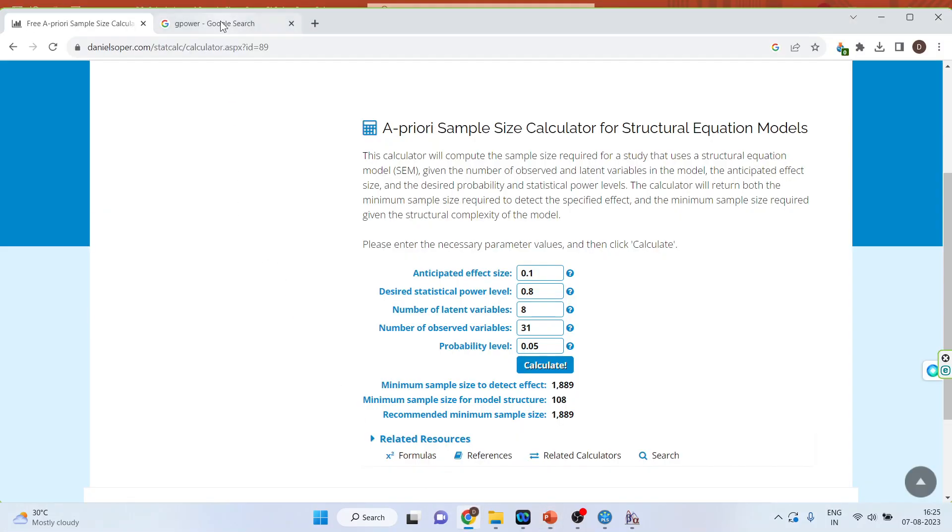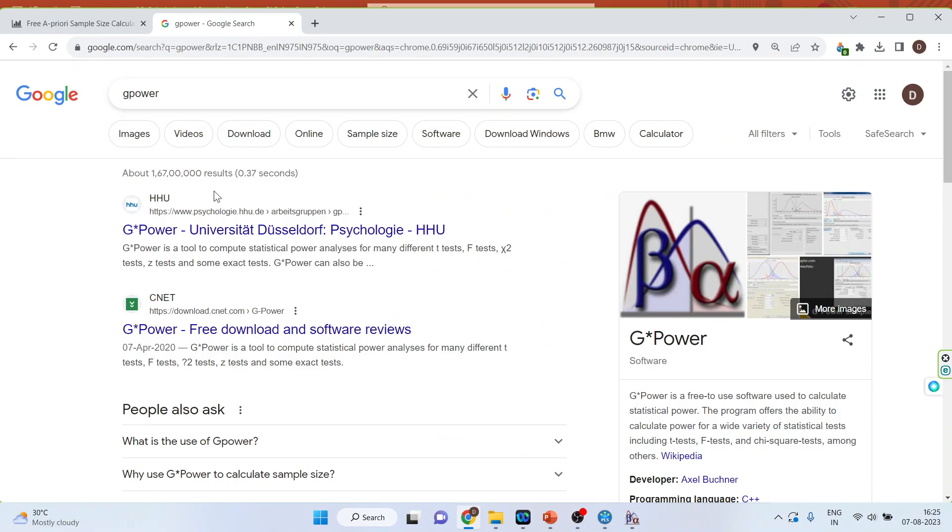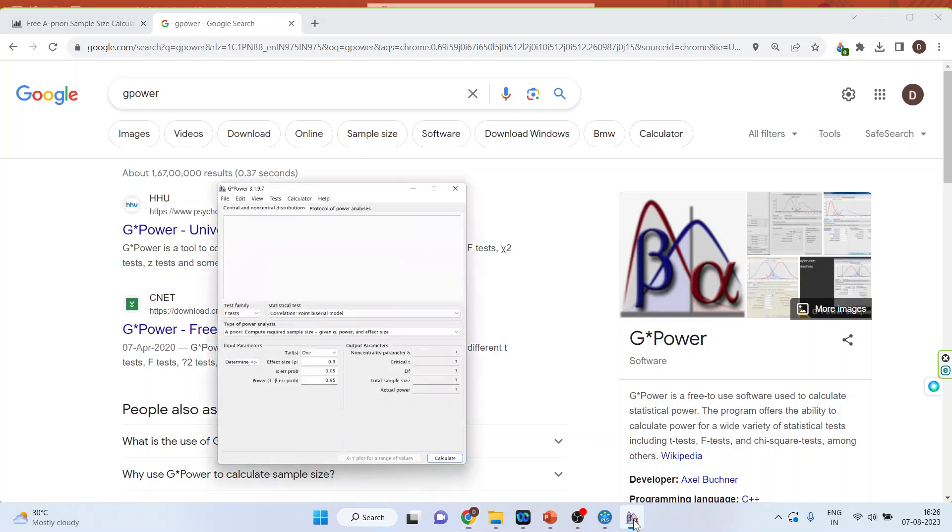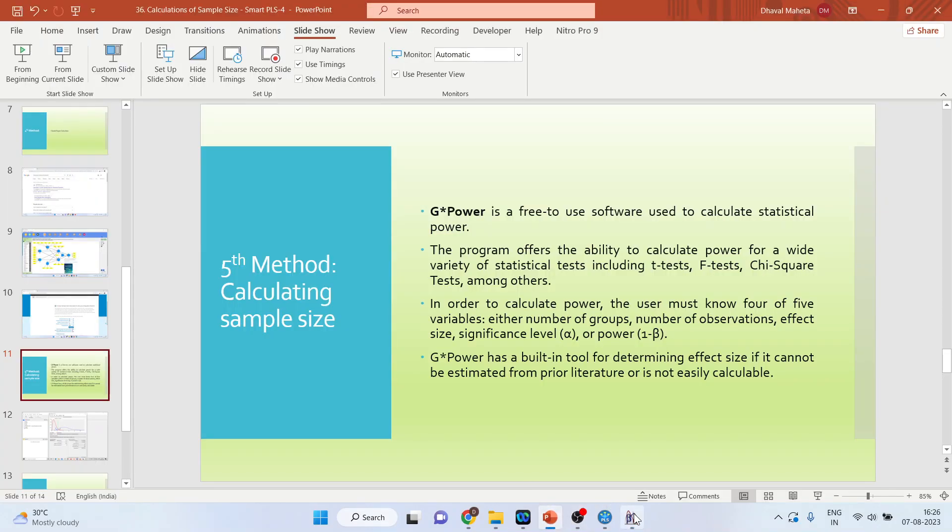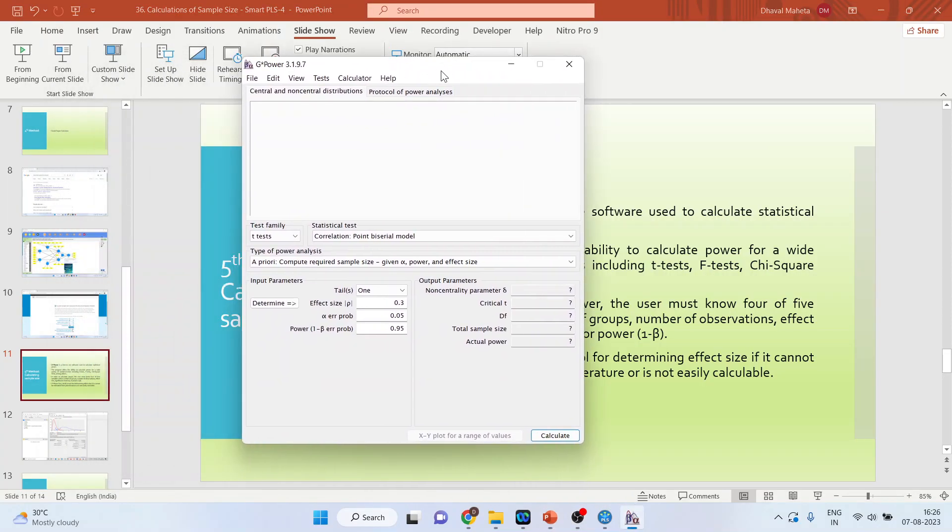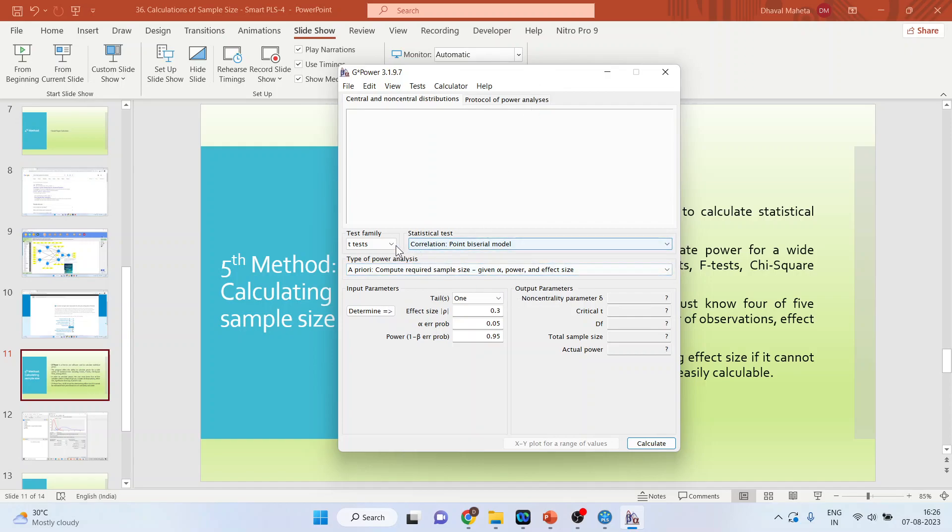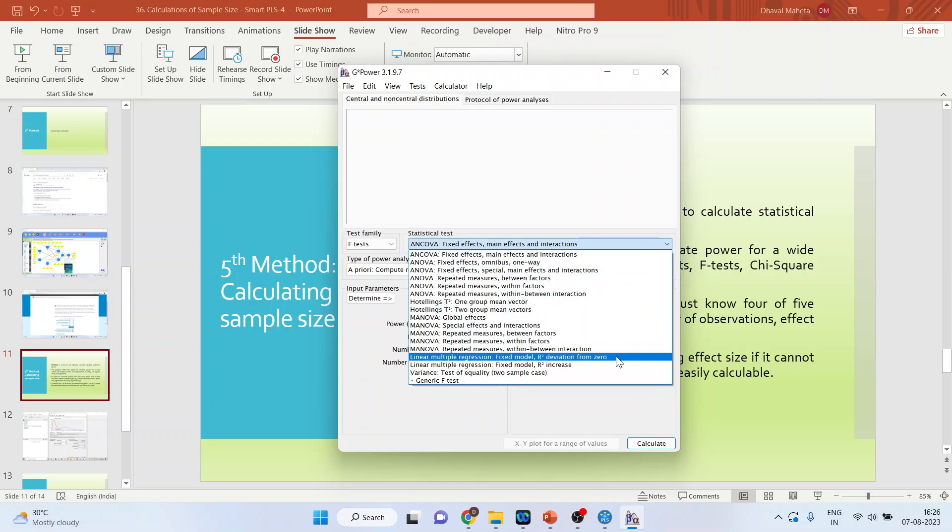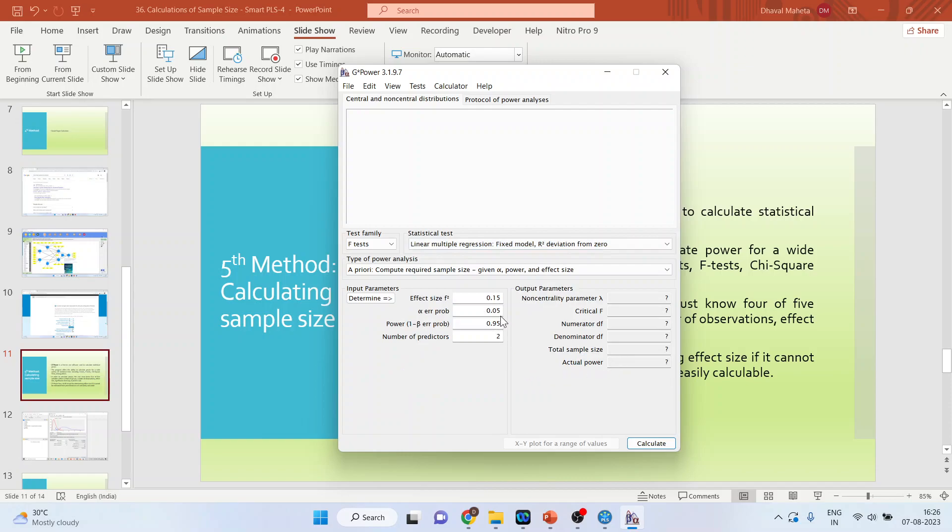So let's see how we can calculate the sample size using G-Power. For this, we will go in Google and we will write down G-Power. From here you can download this G-Power. It is a completely free software. Now activate it. Now in this case, what you will have to do is you will activate F-test. Then you will go here and linear multiple regressions, fixed model, R-square deviation from zero is to be activated. Now we will specify the effect size. So you can see here, how much effect size do we want? Do we require a large effect size, the medium, or the small one?